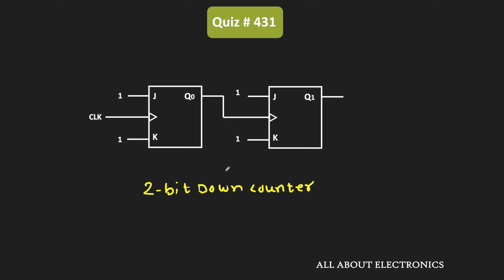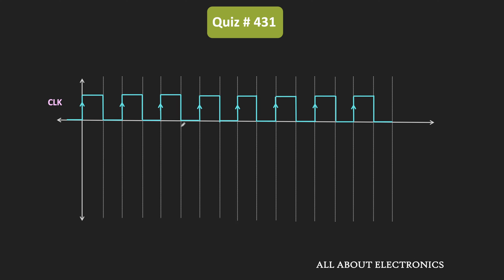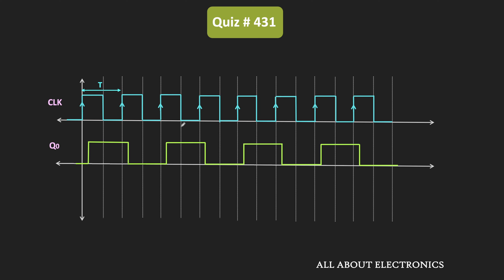The propagation delay of each flip-flop is equal to Δt. That means after receiving the rising edge, each flip-flop will respond after a delay of Δt. Now let us see the output waveform of this 2-bit counter. The time period of the clock signal is equal to capital T. Since both flip-flops are positive edge-triggered, they will respond to the rising edge of the clock signal. The first flip-flop, Q0, will change at every rising edge of the clock pulse, but Q0 will respond after the propagation delay Δt.